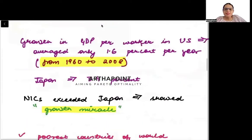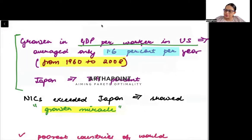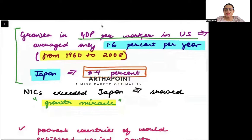Basically, it was seen that the growth rate in every country was very different. Every country's growth rate and growth process was quite different. So, the GDP per worker in US was only 1.6% per year, whereas in Japan, the GDP per worker was 3.4%. It can be seen that the newly industrialized countries, which were our growth miracles, they even exceeded the growth rate in Japan. They showed a growth miracle.